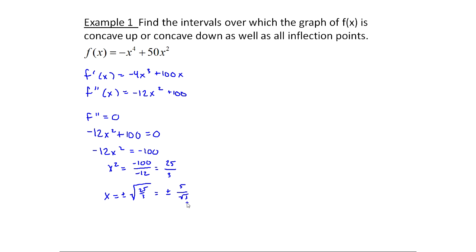So we get two points — and remember, f is defined at these points — two points at which we would probably be switching from concave up to concave down. You could leave this as is, or rationalize the denominator; either one is fine. I need to know what these approximately are when I pick my test number, so checking the calculator, 5 divided by the square root of 3 is approximately 2.87, so this is approximately plus or minus 2.87. These are numbers we use to break up a number line to understand where the function is concave up or concave down.